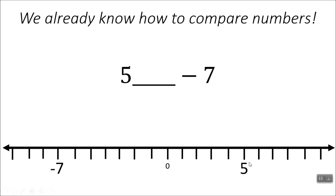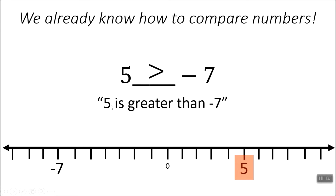When you put them on a number line, the one that's furthest to the right is going to be the greatest value. So 5 is over here on the right — 5 is bigger than negative 7. If you remember those alligator tricks, we're going to eat the 5. This would be read as 5 is greater than negative 7. If you have a hard time remembering your greater than and less than signs, talk to your teacher about ways to remember it.